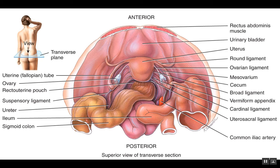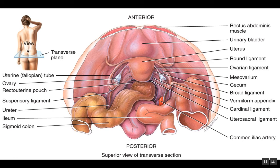You'll also notice many ligaments, as positioning and stability are important for these organs. The major ligaments include the round ligaments, which come from the anterior wall and attach to the uterus; the ovarian ligament, which attaches the ovary to the uterus; the suspensory ligaments, which position the ovary and fallopian tube properly; and the broad ligament, which is the bottom of the peritoneum and fills in a wide area. There are also cardinal ligaments and utero-sacral ligaments, all holding the female reproductive organs in place.